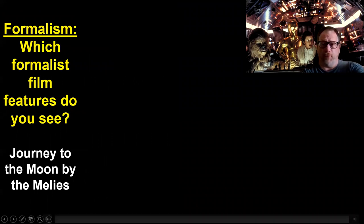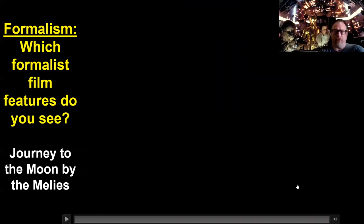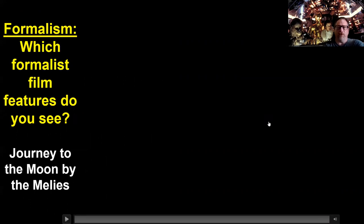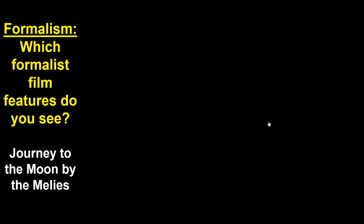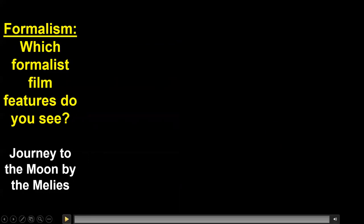One of the most famous formalist films of all time is Journey to the Moon by Melies. As we look at this, think about what features of formalism you're going to see. This is a formalist film — it challenges the nature of reality with editing, coloration, various camera movement, and special effects appearing for the first time. At the same time, today this would actually be a storyline film that's classical. Because later on we invent more formalist types of film, but this is the first one that develops any type of action.